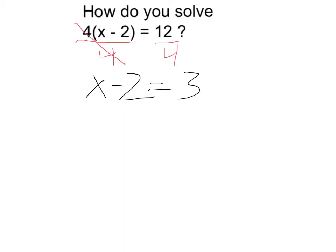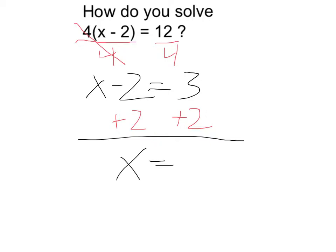And as you can see, this works out very nicely. To get rid of the minus 2, I'm going to need to add 2 on both sides — adding 2 cancels the subtracting 2. And that's going to leave me with x is equal to 5.